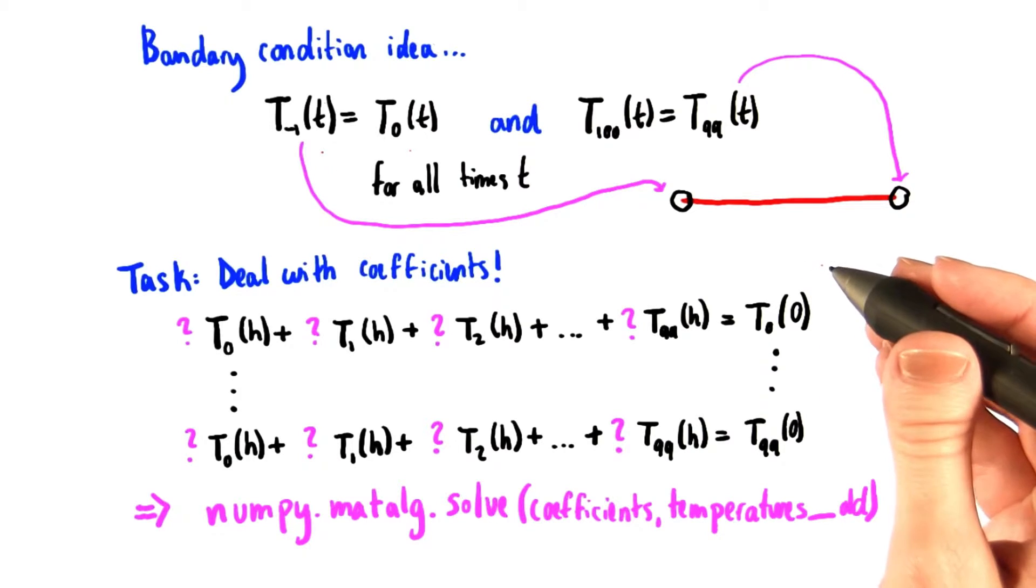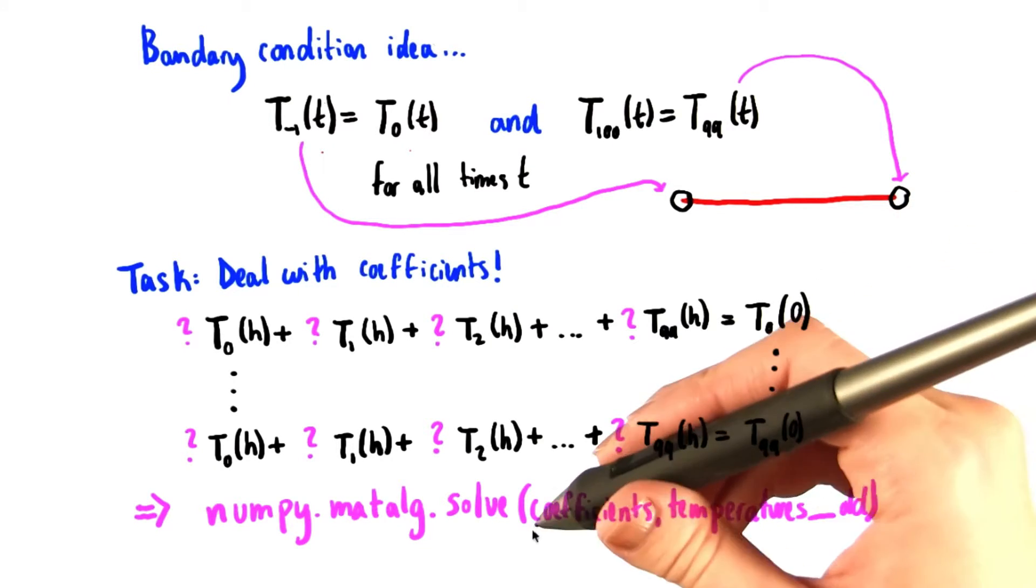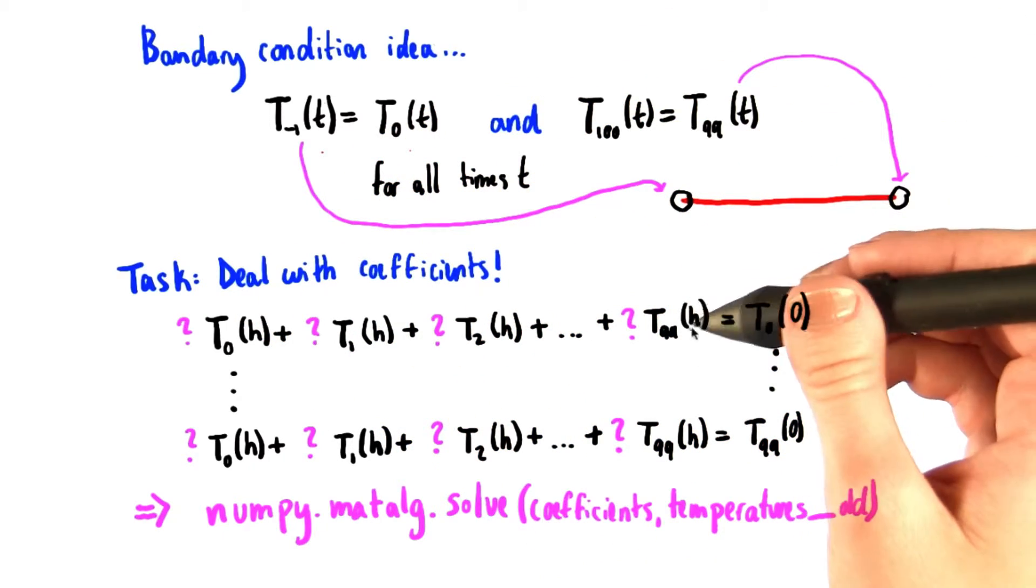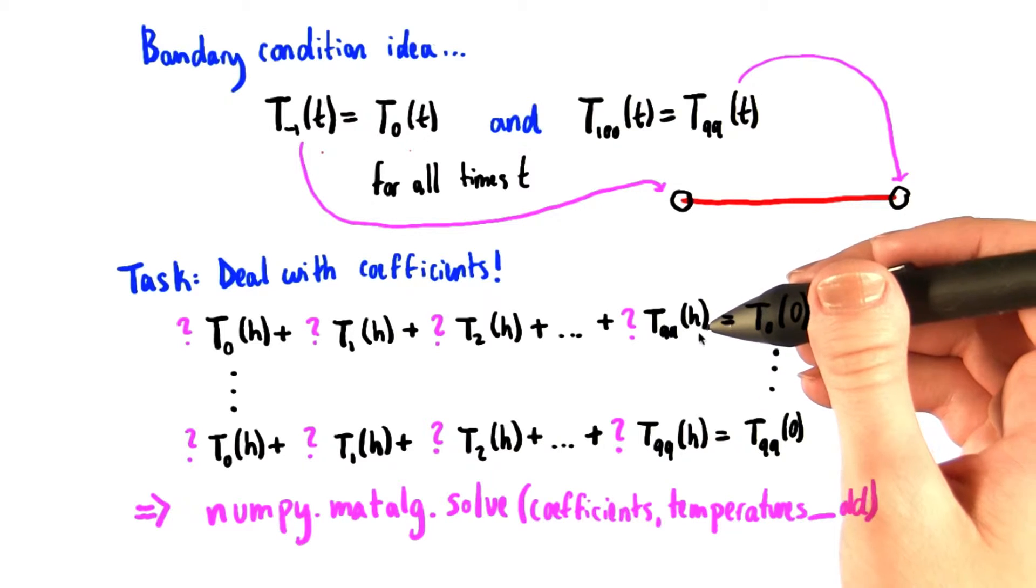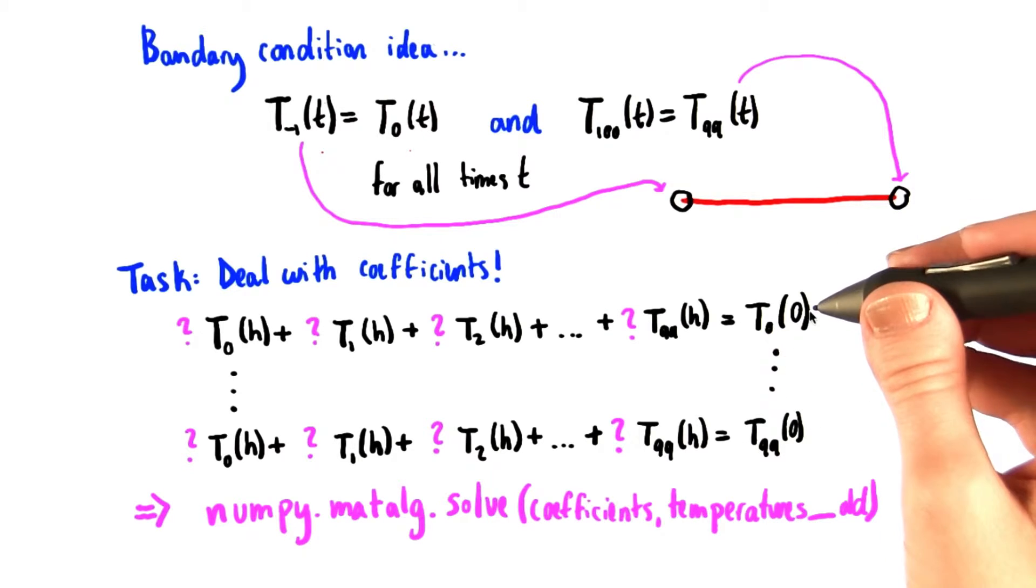When we consider this system of equations as a whole, we can actually think of it more conveniently as dealing with matrices. This method right here, numpy.matmul.solve, deals with equations involving matrices. We have a matrix of the coefficients, which are all of these pink question marks, multiplied by a single column vector, which contains all the temperatures after time step h. These multiplied together equals this vector, which contains all the initial values of the temperatures.